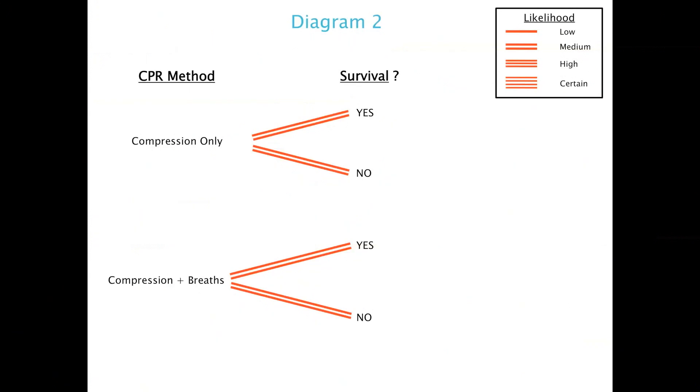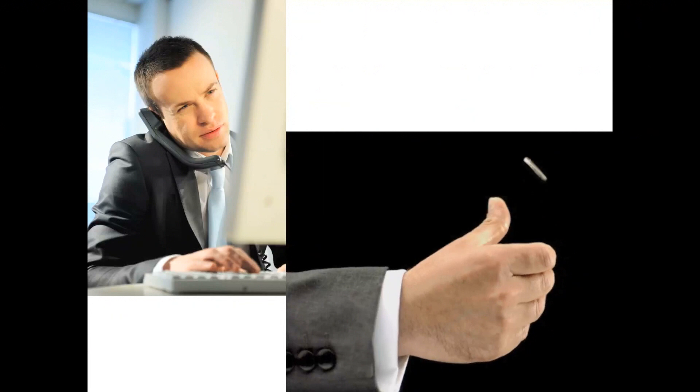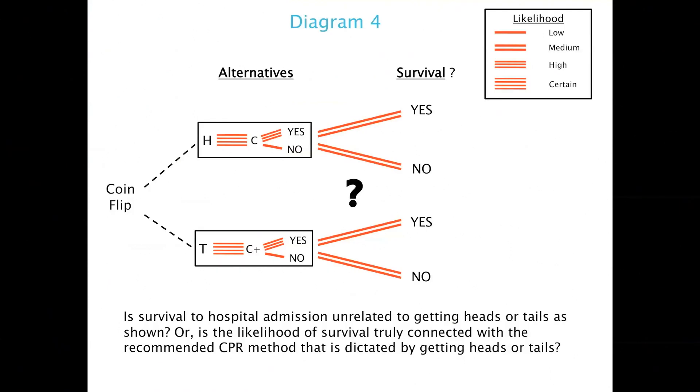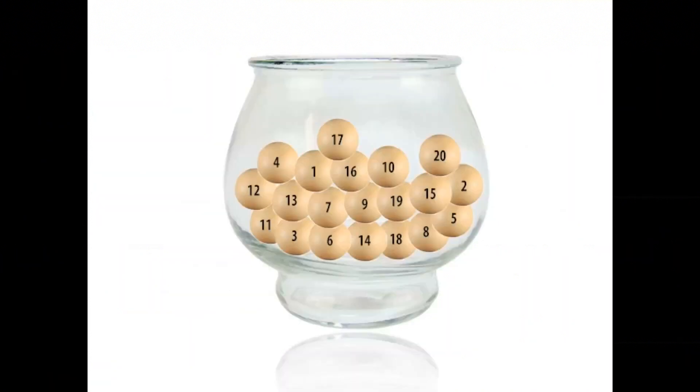We then discussed how the dispatcher linked the recommendation of CPR method to the chance flip of a coin. This linkage created a counterfactual causal concept of relationship between heads or tails and an individual's chances of survival. But the life or death of just one case isn't enough evidence to prove causation. So the dispatcher devised a small clinical trial of 20 successive cases linking the recommendation of CPR method to the random drawing of peas from a bowl. This was done to see if counterfactual causation could be found to exist for at least some of those individual cases.